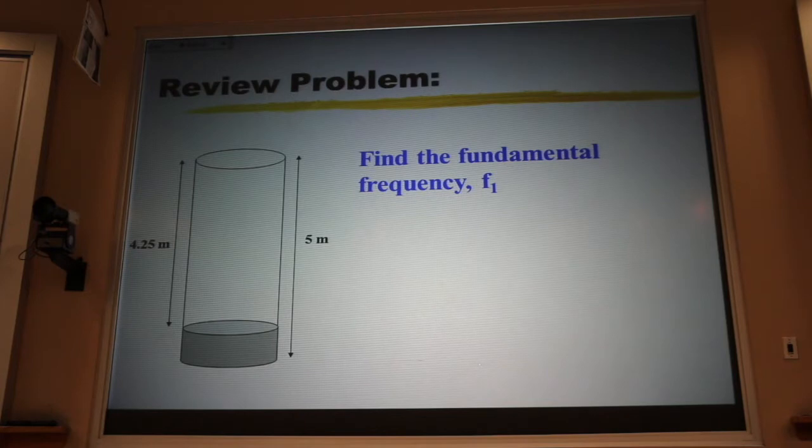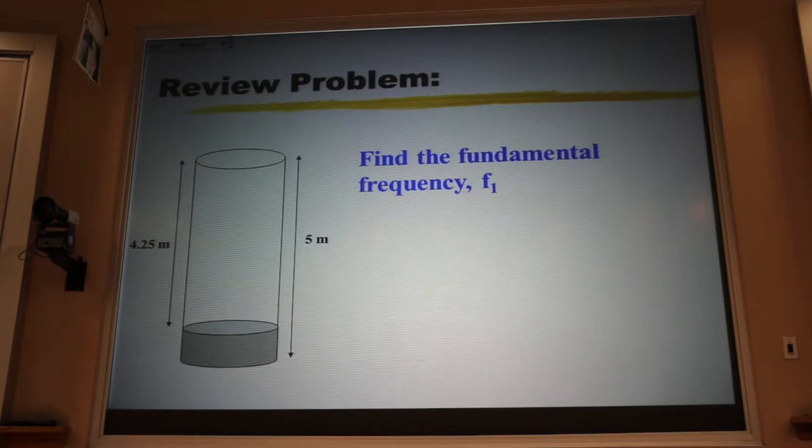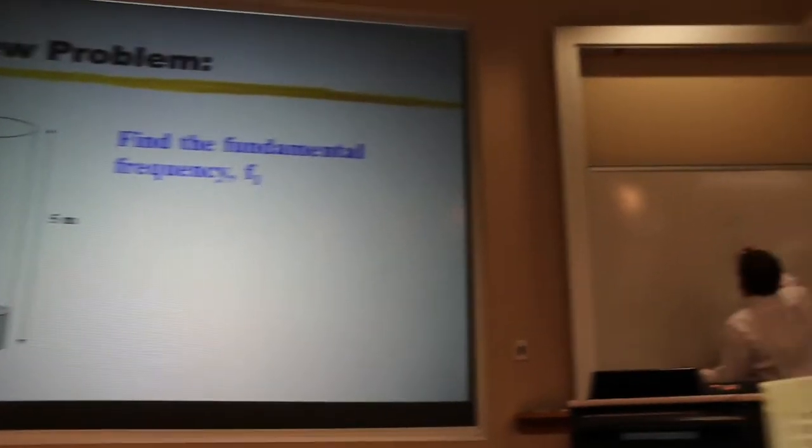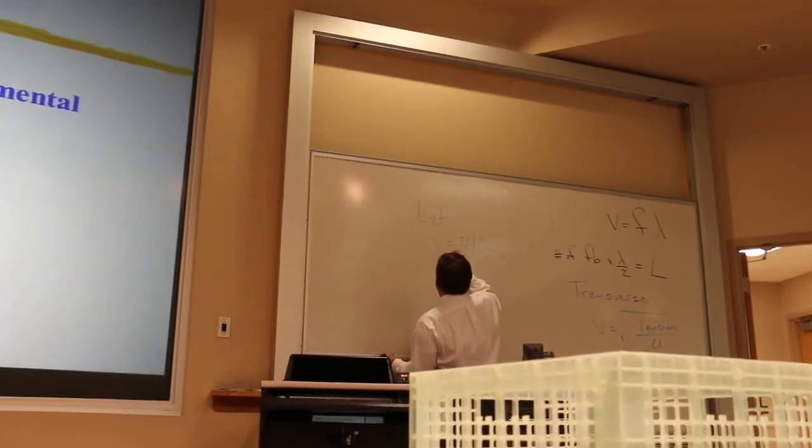I cooked all the numbers in this problem so that they would be easy, so that they would work out really, really nice if we assume it's a little bit cold today. So what we're going to do in this problem is instead of taking 343 meters per second for the speed of sound, we're going to round that down to 340. So in this problem, let V is equal to 340 meters per second.